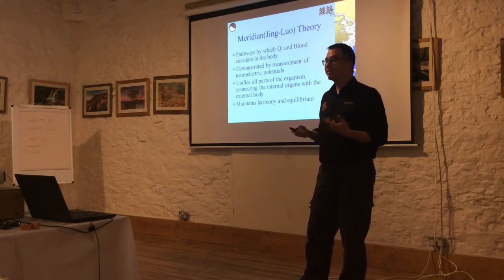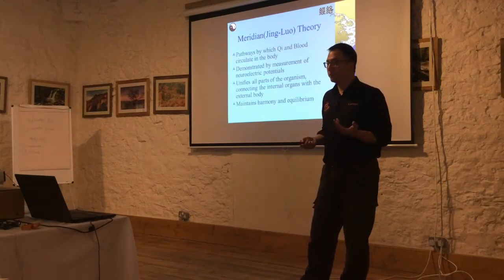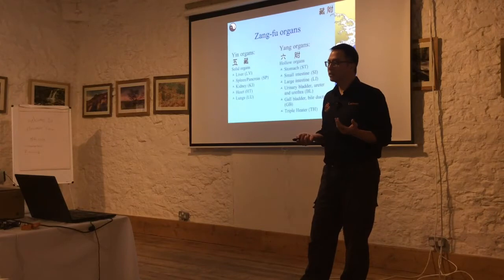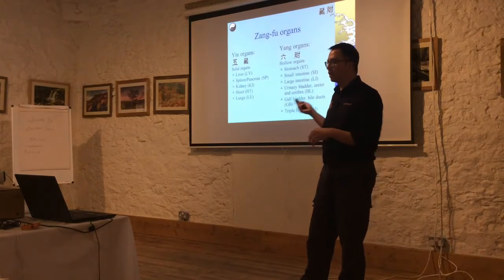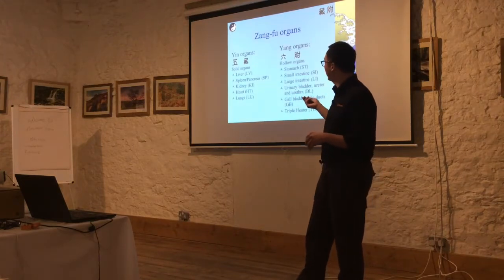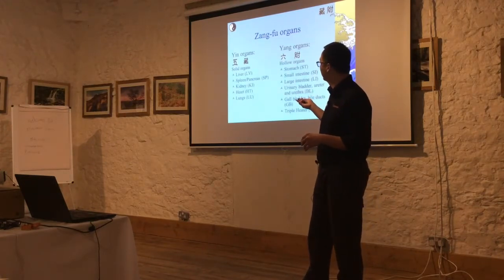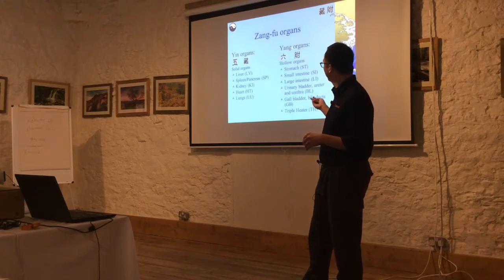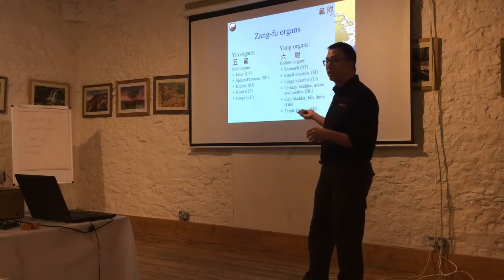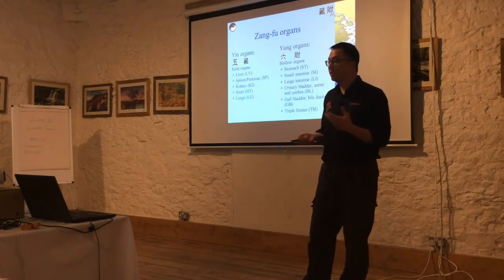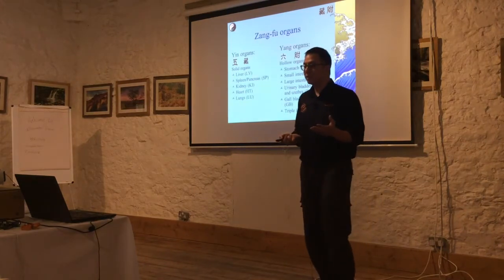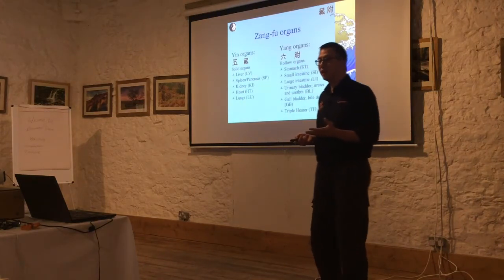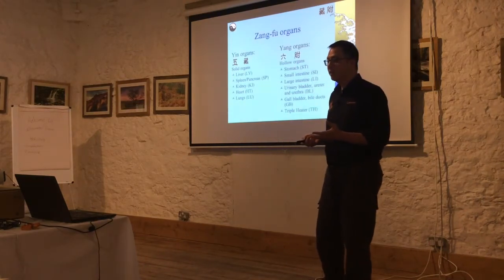The meridian system maintains harmony and equilibrium. The Zangfu organs — we talk about wu zang liu fu: five yin organs and six yang organs, meaning the solid organs and the hollow organs. The five yin organs are the liver, spleen, kidney, heart, and lungs.